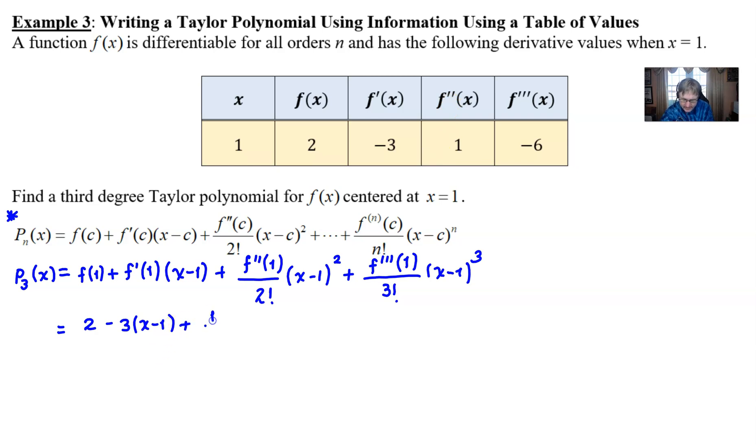f double prime is one. If I divide by two factorial, that's the same as just two. So I'll leave it like this. And then finally, I notice that f triple prime is negative. So we have a negative six divided by three factorial, I could just say six over three factorial. But I could also simplify that six over six is just one. And then I could throw down my value. And there I go.